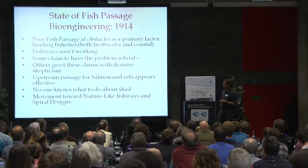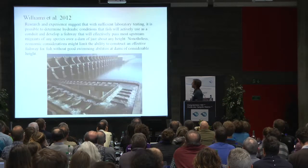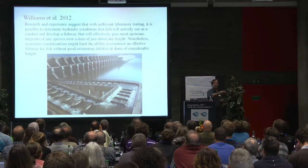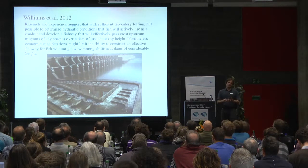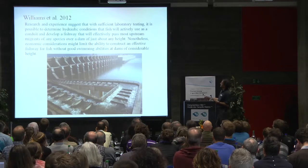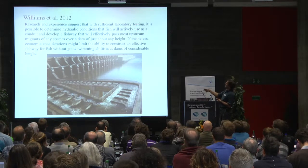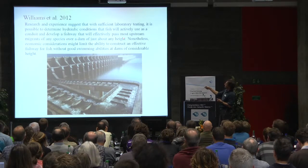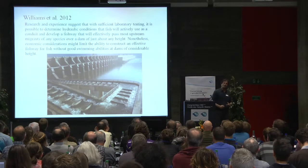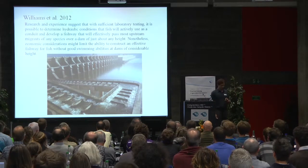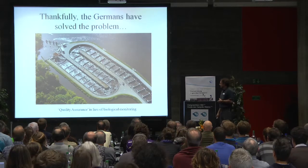Fast forward 100 years, and we have in 2012 a paper by Williams et al., and among those et al. are Greg Armstrong, Chris Katapodes, Michel Larignier, and Travad — names that you'll be familiar with. And again, what do we see? 'Research and experience suggests with sufficient laboratory testing it's possible to determine the conditions that fish will actively use as a conduit to develop a fishway that will effectively pass most upstream migrants of any species over a dam of just about any height.' So 2012, now we've got it nailed. We know what we're doing. Everything has been solved. There's really no excuse for not building fishways because we have this nut cracked.